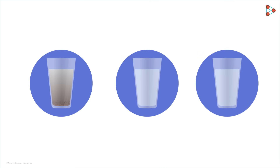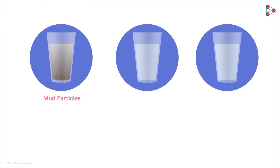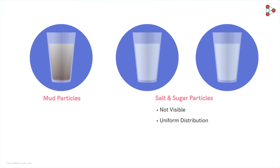In front of you there are three glasses of water. In one we've added mud, in another salt, and in the third sugar. Can you identify which glass has which mixture just by looking at them? You can easily identify the muddy water, but you can't differentiate between the other two — both look just like water. This is because we cannot see the dissolved salt or sugar particles with our naked eyes; they are evenly distributed in water. Whereas in the glass with mud, we can easily see the mud particles suspended and settled.